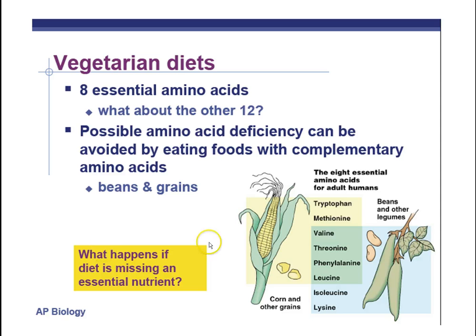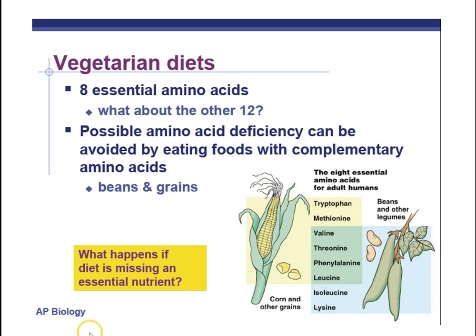One other side note: you do have to eat the grains with the beans at the same time, because when you put together your proteins, you need to have all those amino acids to be chained together at the ribosome at the same time. If you don't have all the amino acids available when you make your proteins, then you can't make the protein — you can't make a protein with a missing amino acid. So that's the reason why you have to eat them at the same time.